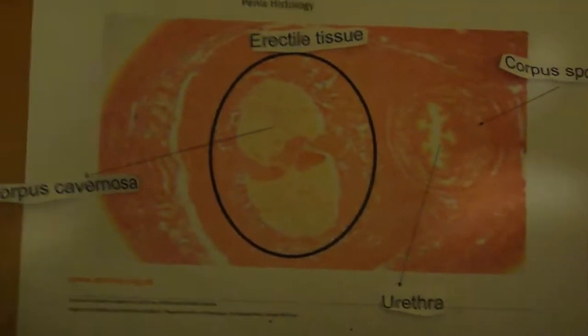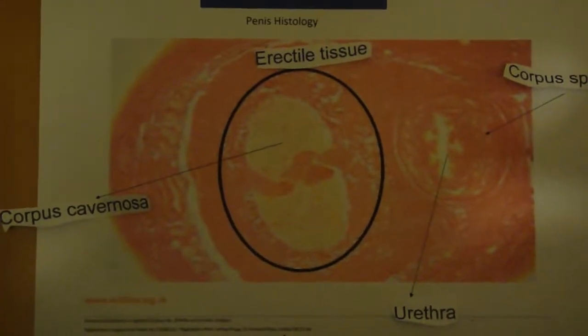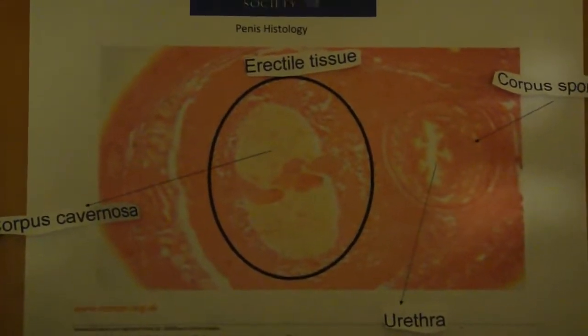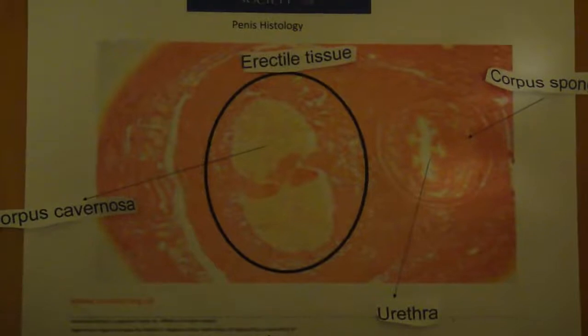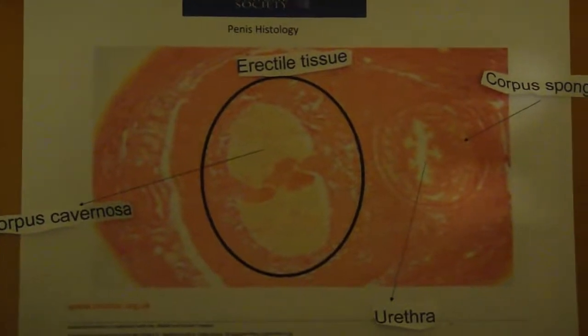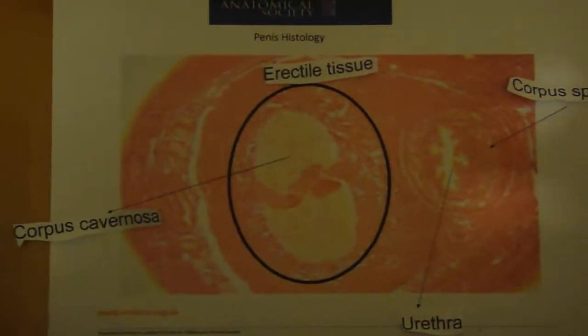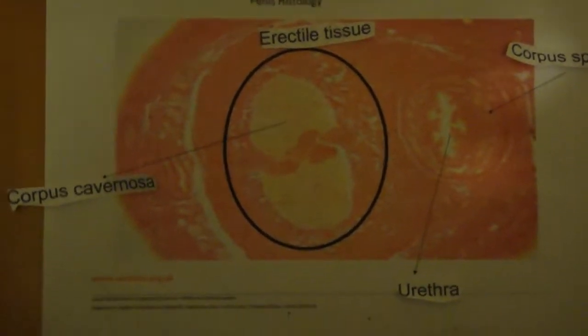The erectile tissue of the corpora consists of a network of endothelial-lined blood spaces, separated by fibrous tissue and smooth muscle.